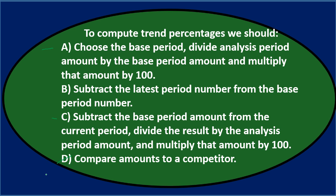A and C sound very similar, which makes me think it might be one of those two. Since A and C seem similar, I'll say it's probably not B. So between A — choose the base period, divide analysis period amount by the base period amount, and multiply by 100 — or C — subtract the base period amount from the current period, divide the result by the analysis period amount, and multiply by 100.